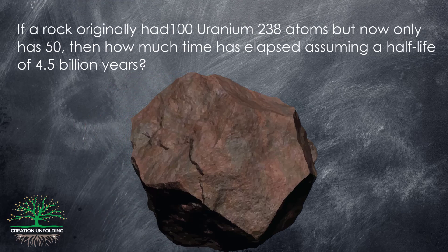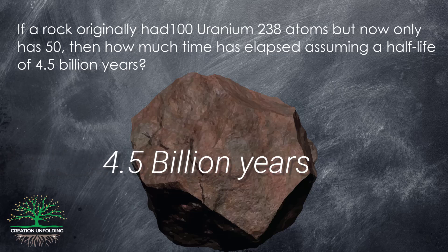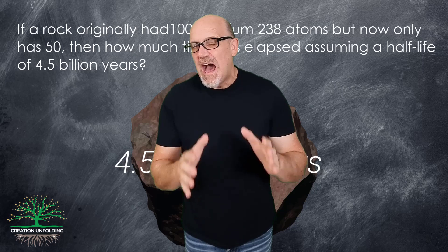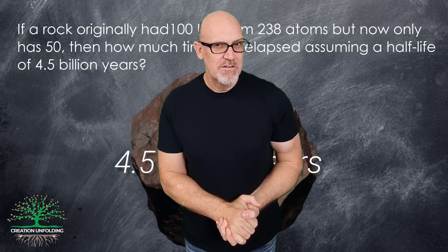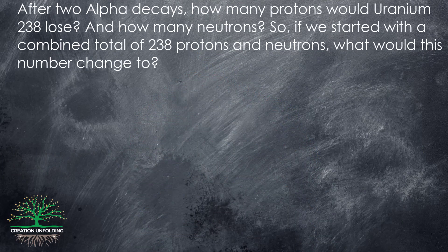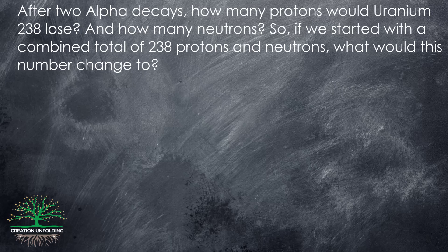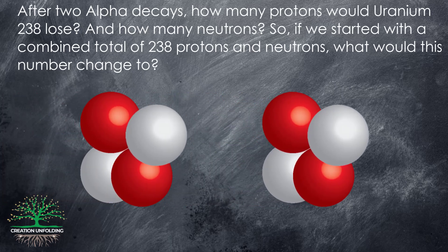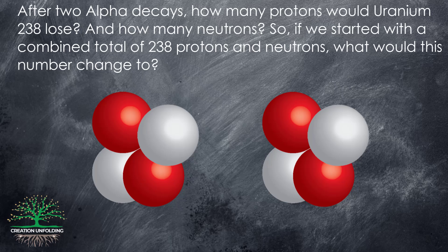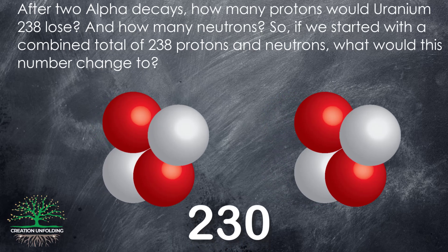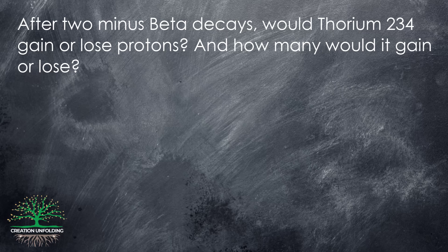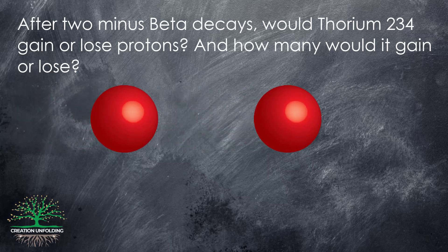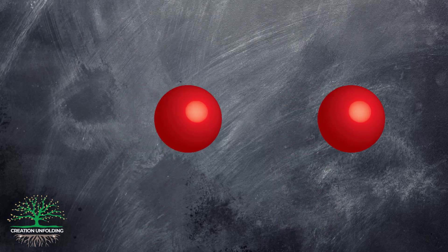Here are the answers. If a rock originally had 100 uranium-238 atoms but now only has 50, the answer is 4.5 billion years. After two half-lives, 25 atoms would be left. After two alpha decays, uranium-238 would lose four protons and four neutrons, so subtracting 8 from 238 gives us 230. After two minus beta decays, thorium-234 would gain two protons, because two neutrons turn into protons.